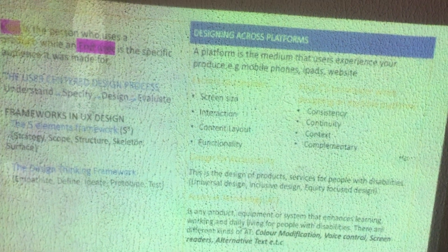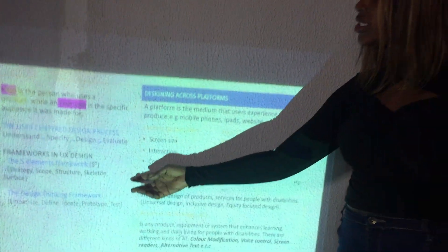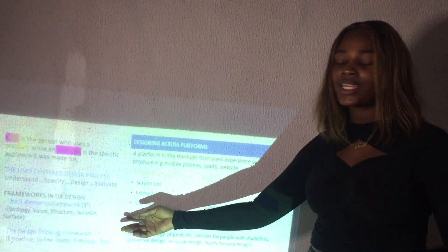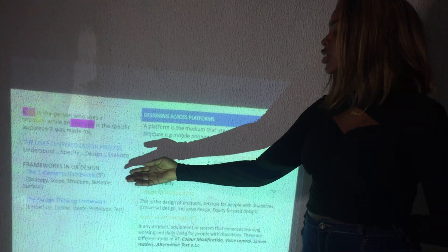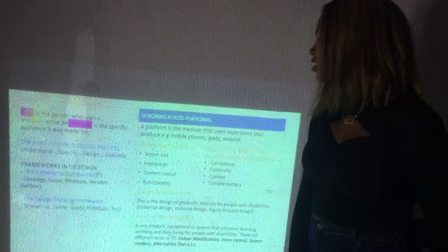We also learned about the user-centered design process, which covers the understand, specify, design, and evaluate phases. Then we learned about 2 frameworks in UX design. That's the 5 elements framework — strategy, scope, structure, skeleton, and surface — and also the design thinking framework.